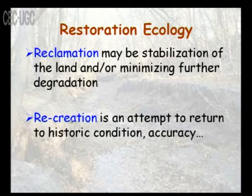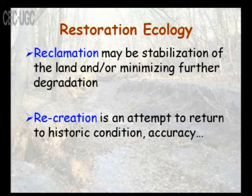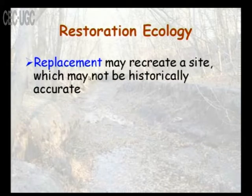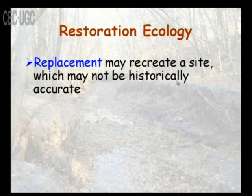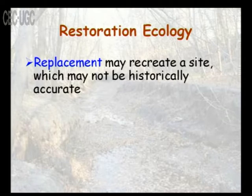The third category is recreation — an attempt to return to historic condition and accuracy. This is a difficult process, but sometimes necessary. The next is replacement, which may recreate a site that is not historically accurate. Instead, we replace it with a similar ecosystem — for example, creating a similar environment with equivalent habitat elements, birds, animals, and temperature zone.